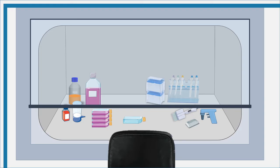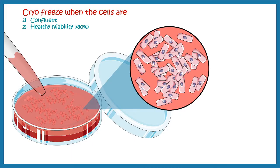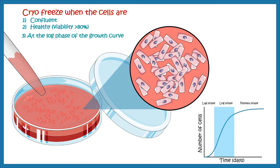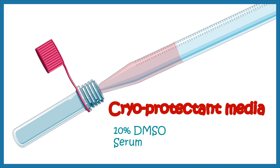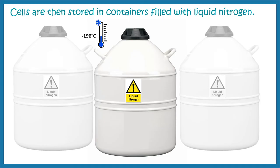Under lab circumstances, how we can perform cryopreservation — we need a specific media called cryoprotectant media. We need to understand when is a good time to freeze the cells: the cells need to be confluent, healthy, and their viability should be greater than 80%. In a ballpark estimate, the cells need to be at their log phase of the growth curve. We add cryoprotectant media containing DMSO and serum, then transfer the cells into a cryoprotectant container where the temperature drop is gradual. When the temperature reaches minus 80 degrees centigrade, they can be transferred into liquid nitrogen containers where the temperature is as low as minus 190 degrees centigrade.